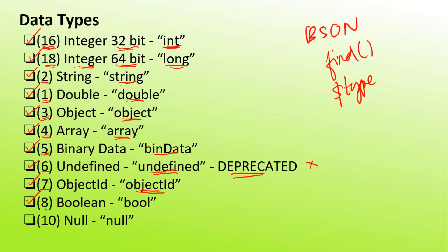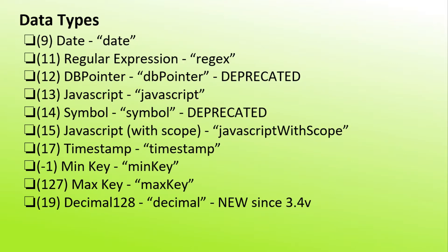The next data type is the boolean data type. The assigned number is 8 and the alias is 'bool'. The next is null, with assigned number 10 and alias 'null'. Then we have the date data type with assigned number 9 and alias 'date'. Then we have the regular expression data type with assigned number 11 and alias 'regex'.